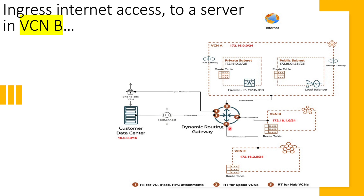There is a third routing table meant for the hub attachment. That attachment will learn all the routes — it will be the only one that knows routes to all attachments. We are essentially hiding the routes of the spoke VCNs from the on-prem data center. Even the spoke VCNs themselves cannot talk to each other directly; they all have to route traffic to the hub VCN firewall. Let's go through the flows first and understand the routing table touch points we need to configure using DRG version 2.